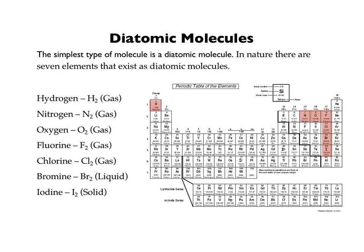Here's another way to remember it — this is the way I remember it a lot. I'm going to write the symbol of these elements in a specific order to form a word. It's a fake word, but it's a word. The word is H-O-F-B-R-I-N-C-L. 'HofBrInCl.' If you can write the word HofBrInCl, you have written the symbols for all seven of them.